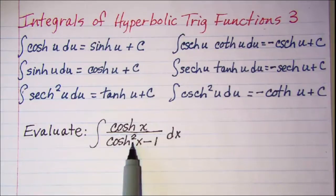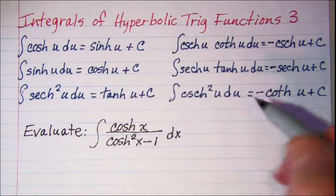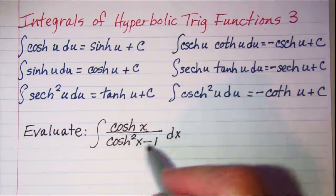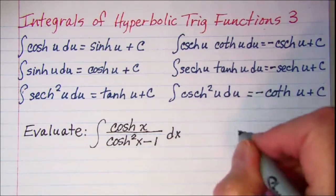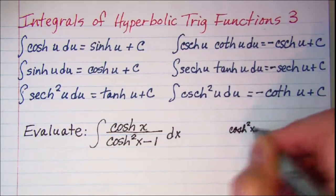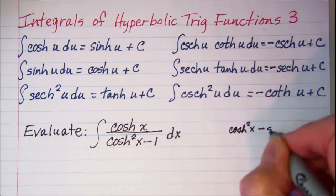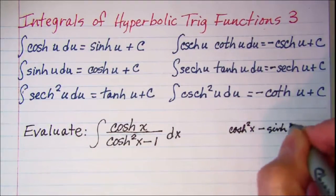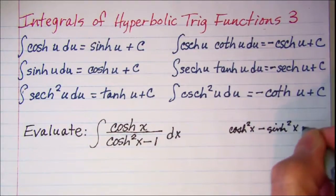Because the hyperbolic trig functions make use of the unit hyperbola, our identity we can use for this is hyperbolic cosine squared minus hyperbolic sine squared is equal to 1.